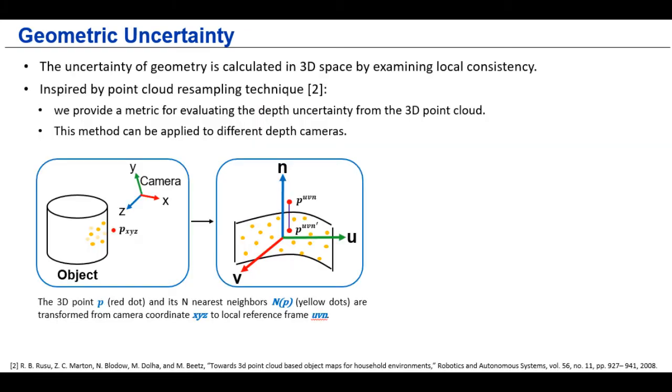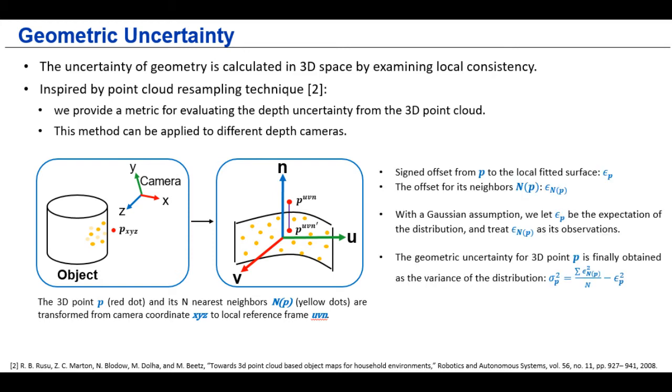And for geometric uncertainty, for each pixel, we convert it into the 3D space and examine its local consistency with its neighbors. We first fit a local quadratic surface, and the geometric uncertainty basically measures how far the point is to the local surface. Because this method is based on the 3D point cloud, it doesn't have to be limited to the active stereo cameras, and it can be potentially applied to different depth cameras for estimating the geometric uncertainty.